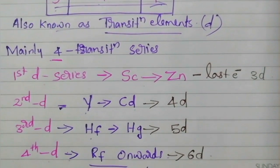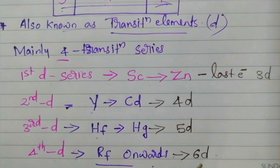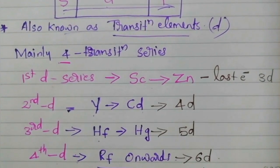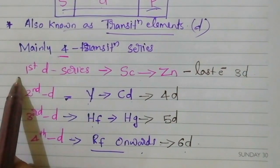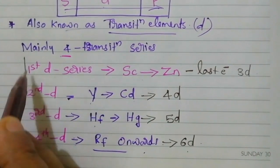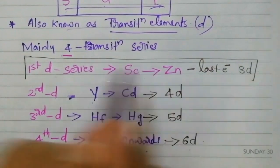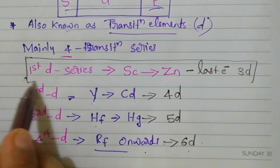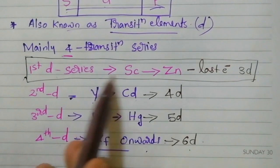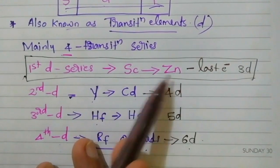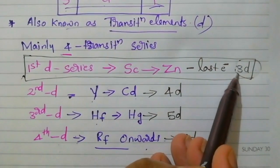Generally the electron enters to the D orbital, but specifically to the 3D, 4D, 5D, and 6D orbitals. We have four transition series, but we will focus more on the first D series — the elements from scandium to zinc — and study their names along with their outer electronic configurations, which we already covered in coordination chemistry.